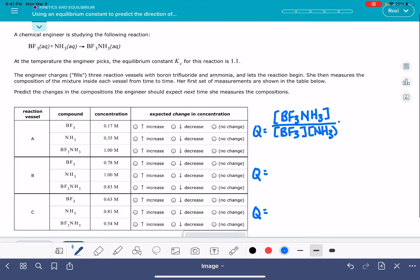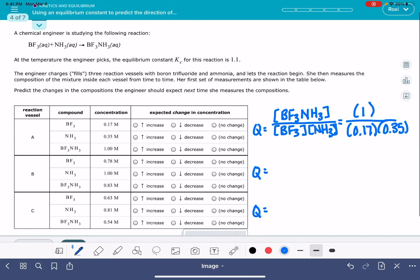And then what we're going to do is plug in the values of the concentrations of all of these substances for our first data set. The BF3NH3 concentration is 1, and the BF3 concentration is 0.17, and the NH3 concentration is 0.35. And then we will go ahead and solve this on the calculator.